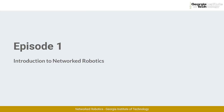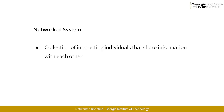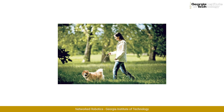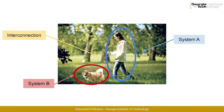First of all, what is a network system? We will refer to a network system as a collection of interacting individuals that somehow share information with each other. For example, a person walking the dog is a very simple representation of a network system. The dog and the person are both individuals, each with their own characteristics and way of moving — which we refer to as their dynamics — and they interact by applying forces to a leash.